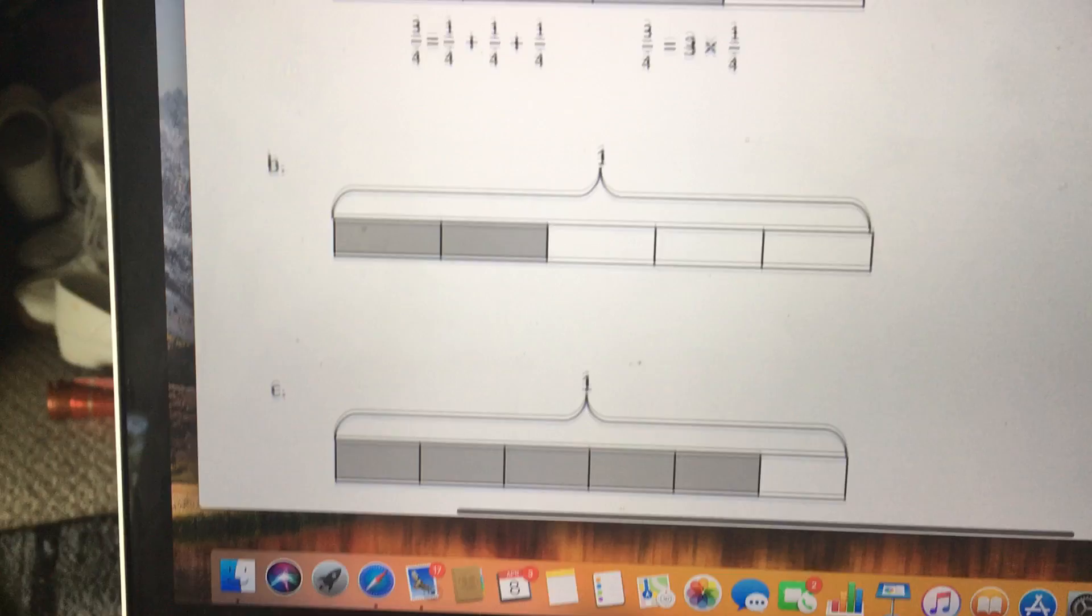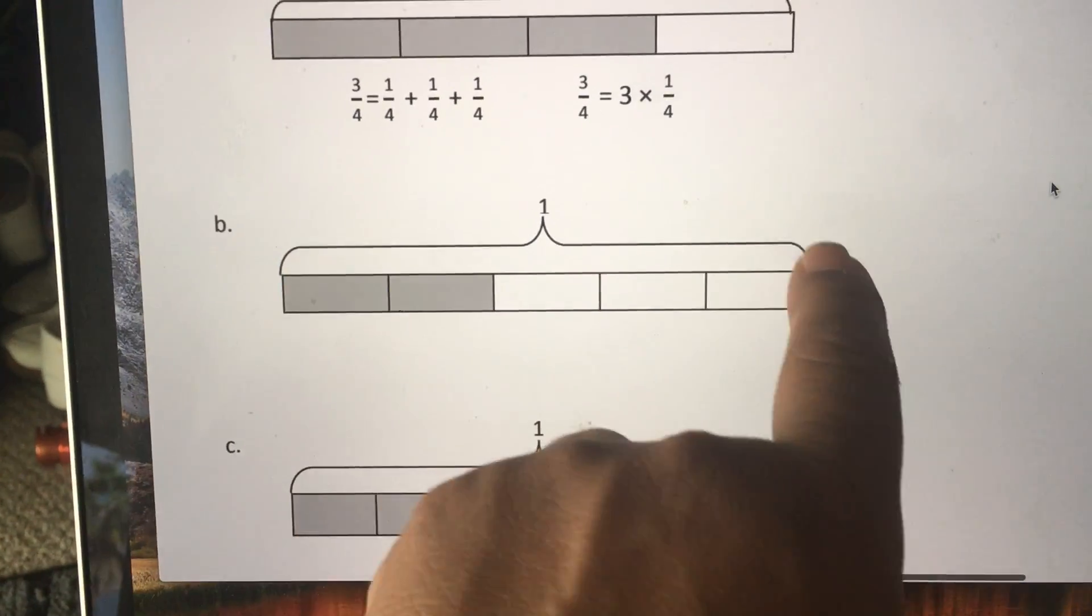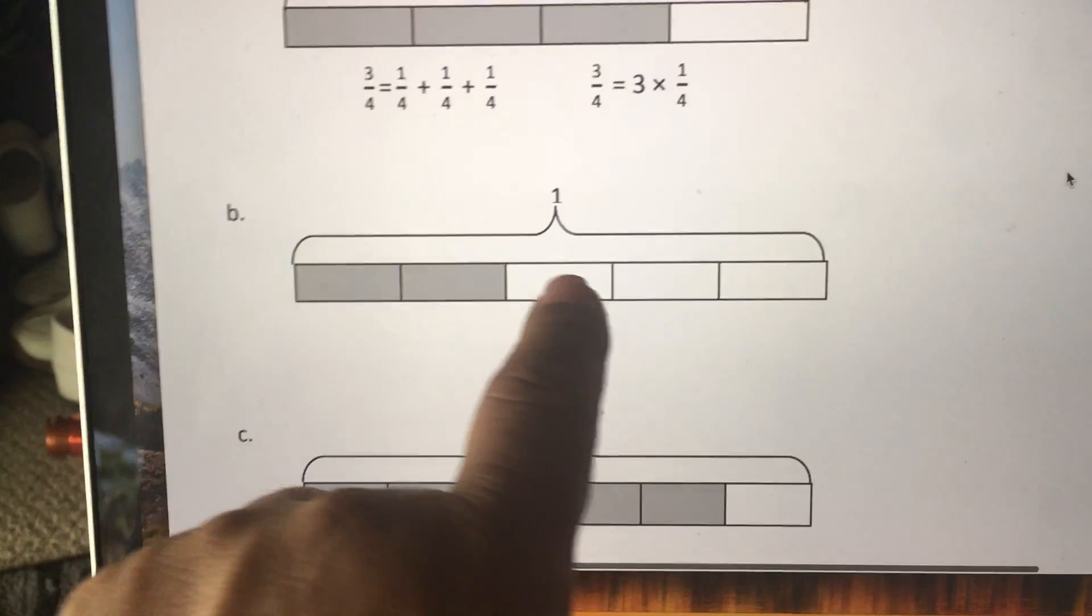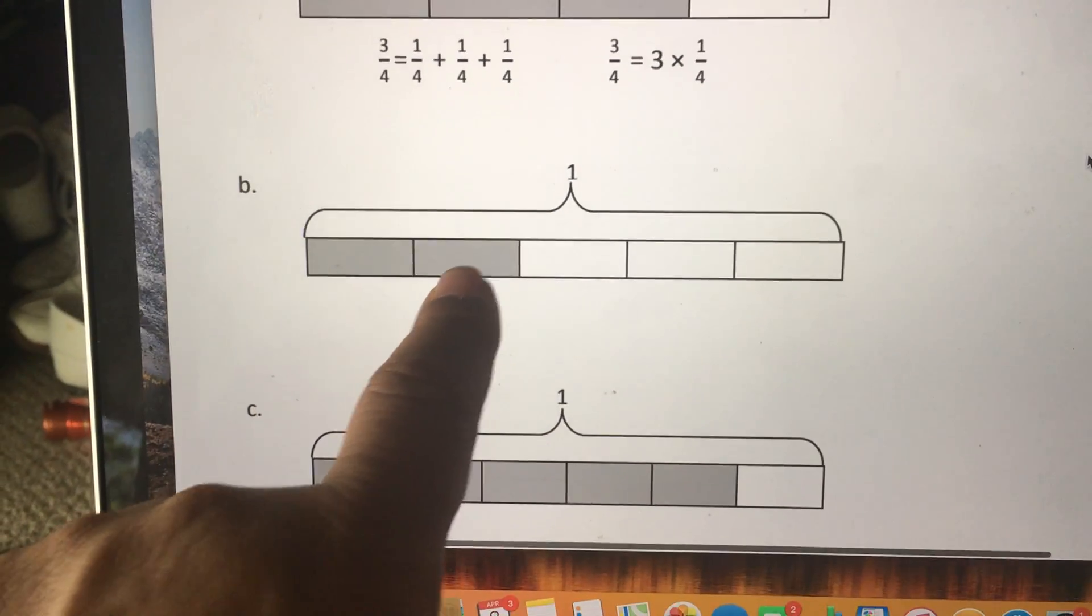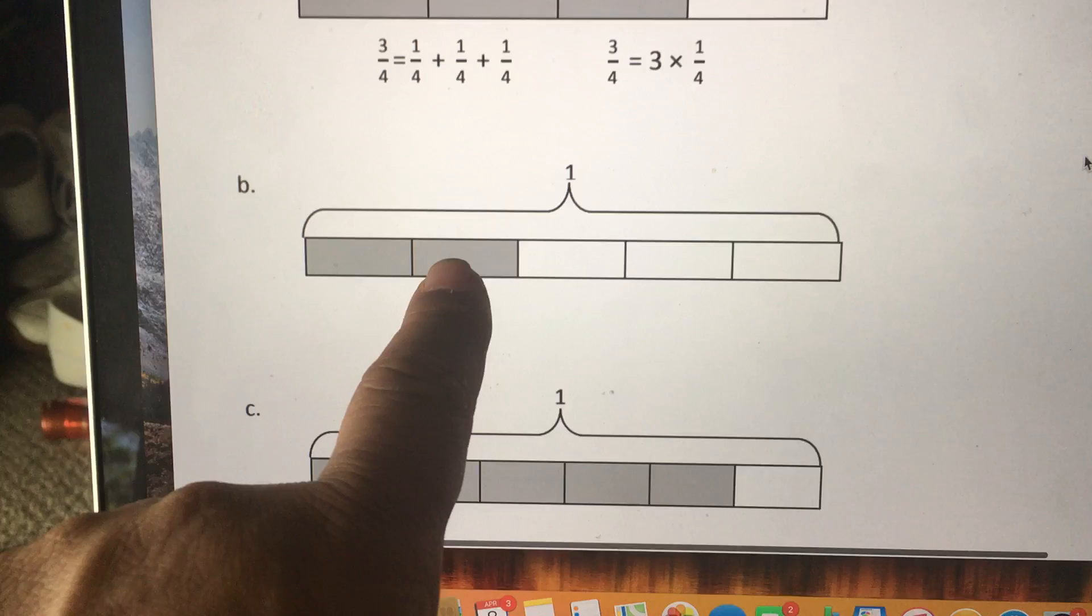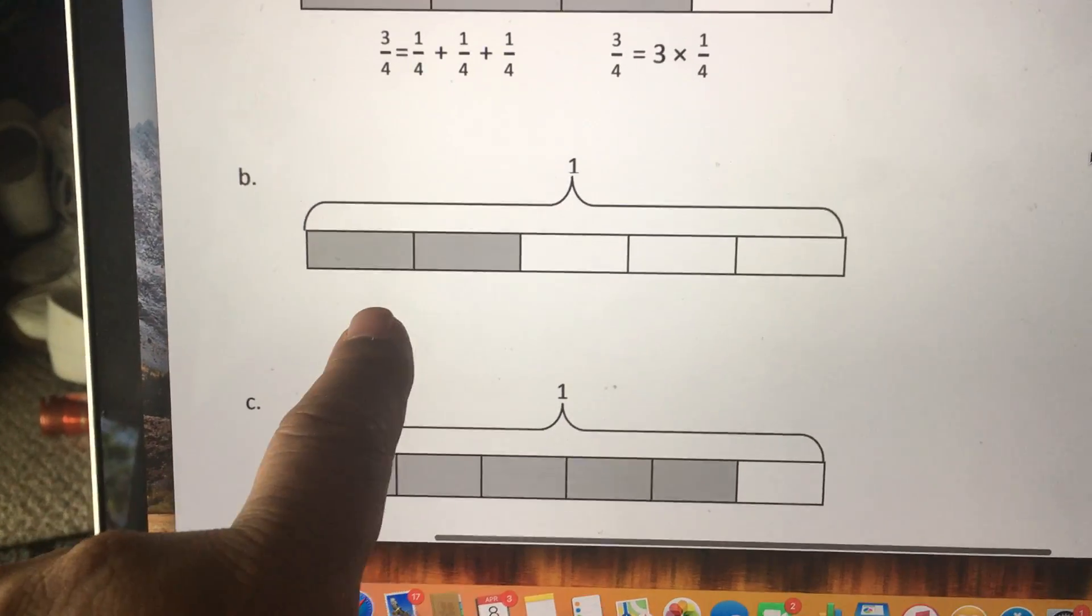So let's look at the bottom one here. Here's a whole bar of chocolate. Divide it up into five pieces. Two are shaded, so that'd be one-fifth plus one-fifth equals two-fifths.